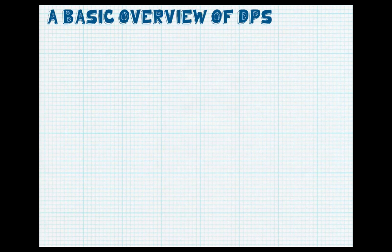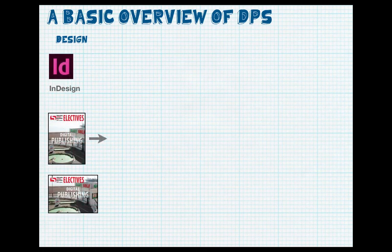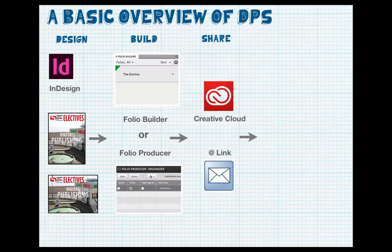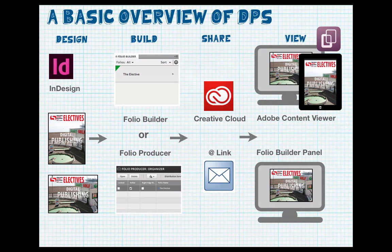There are four main stages from design to view. First, design — where we design our static content and put the interactive overlay on top. Then we build our content by adding articles, which are contained within a Folio, done in the Folio Builder or the Folio Producer. Then we can share our Folios via the Creative Cloud and link to other Adobe members. Finally, we can view our content on the Adobe Content Viewer on our desktops and tablet devices, and share linked content with other members on our Folio Builder panel.